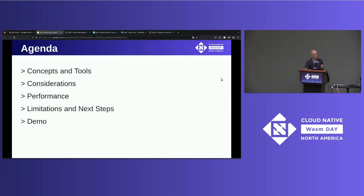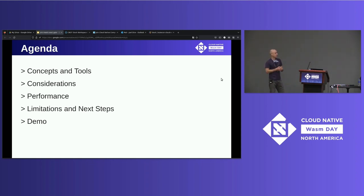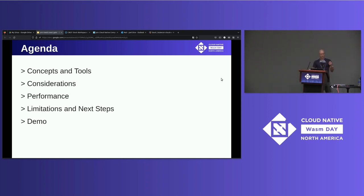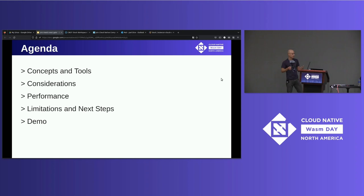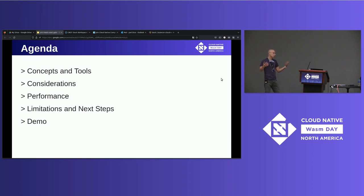Today we're going to focus in particular on JVM languages: Java itself, Scala, Clojure, Kotlin — whatever your favorite JVM language is. We want to see that work in all those environments. We'll start by looking at some of the traditional tools you'd use in Java development, then compare those with what you'd use today to develop WebAssembly components, see how we can combine them, look at why you would want to do that, and also why you might not want to.